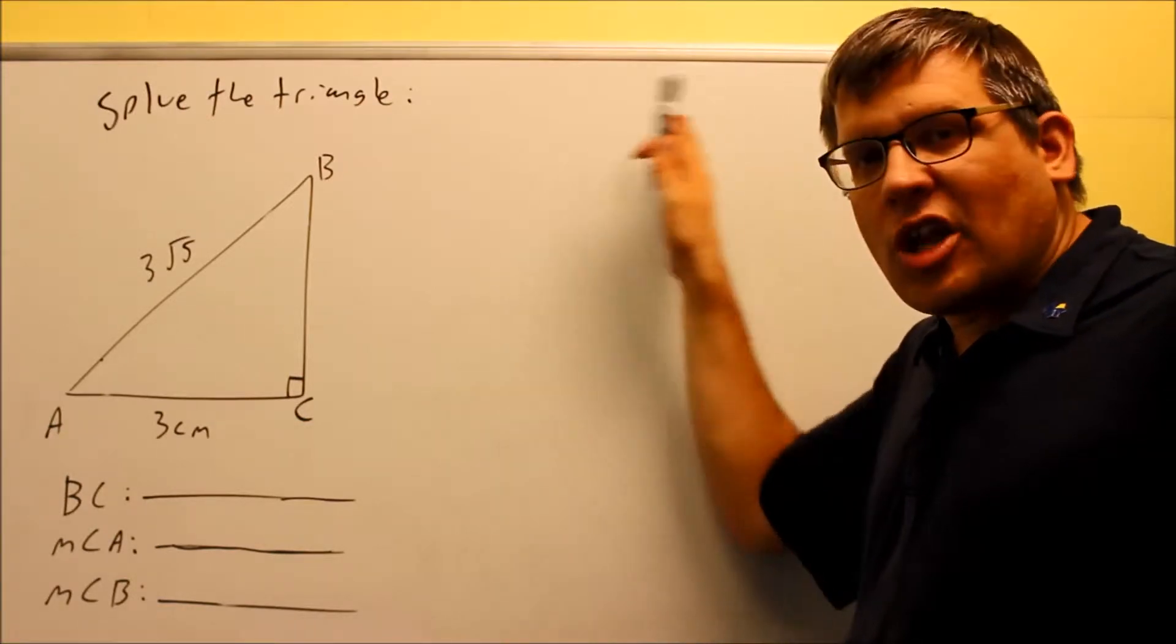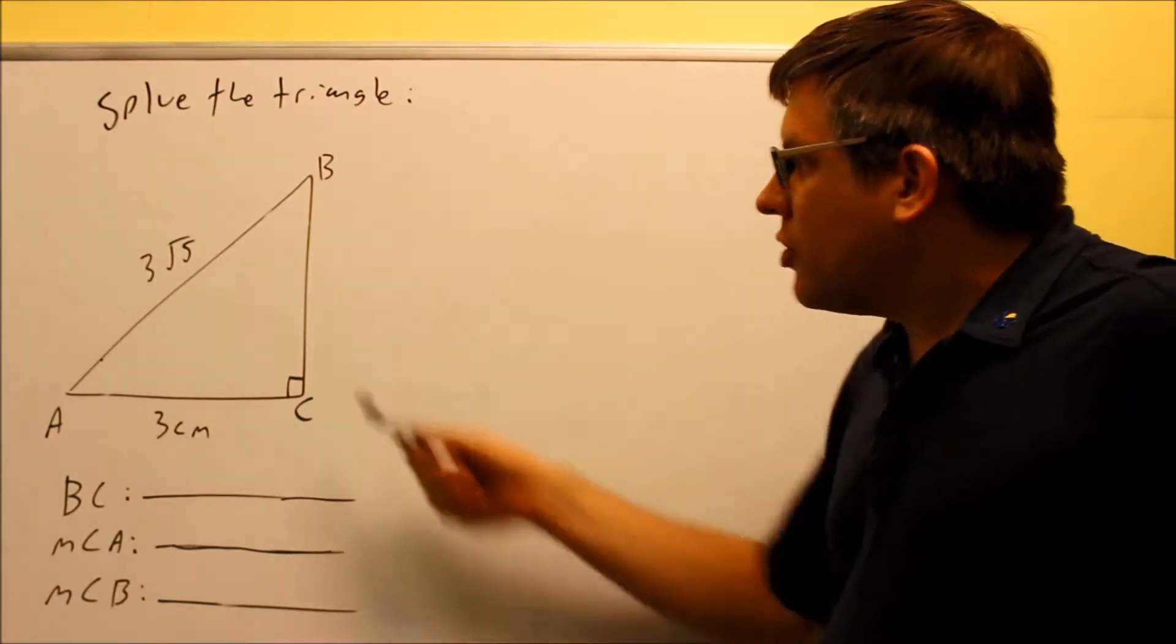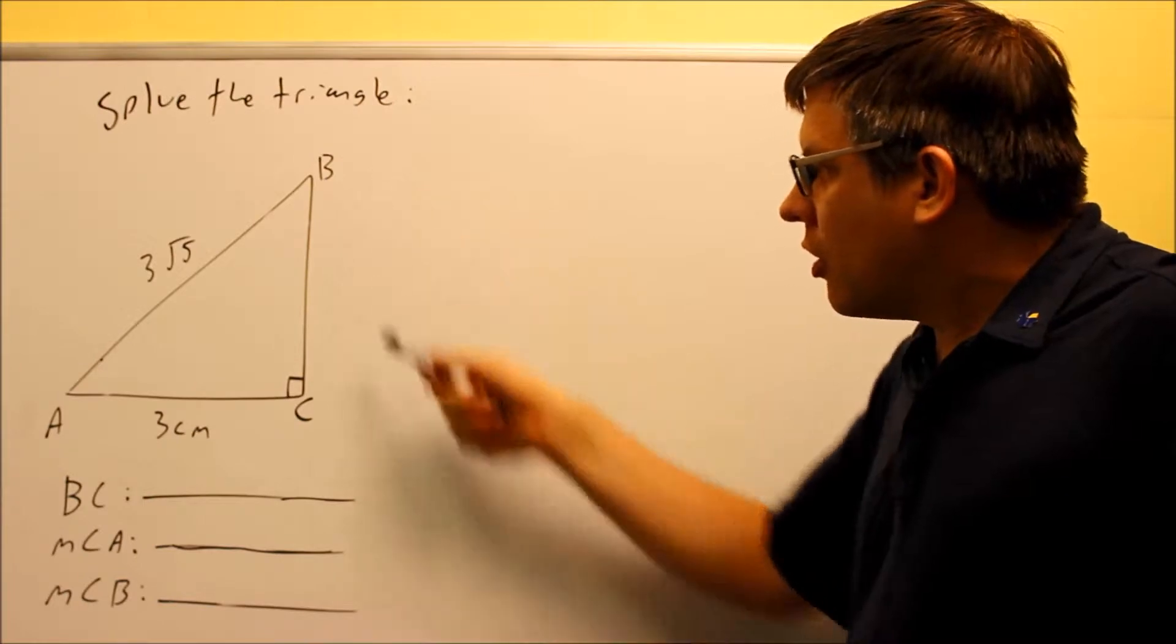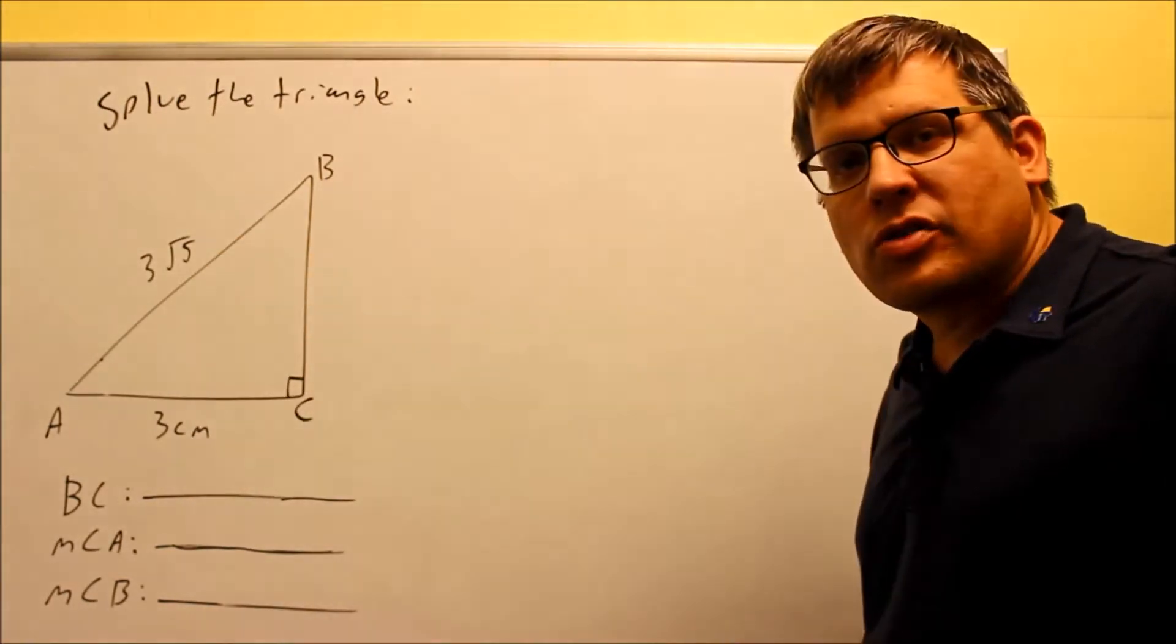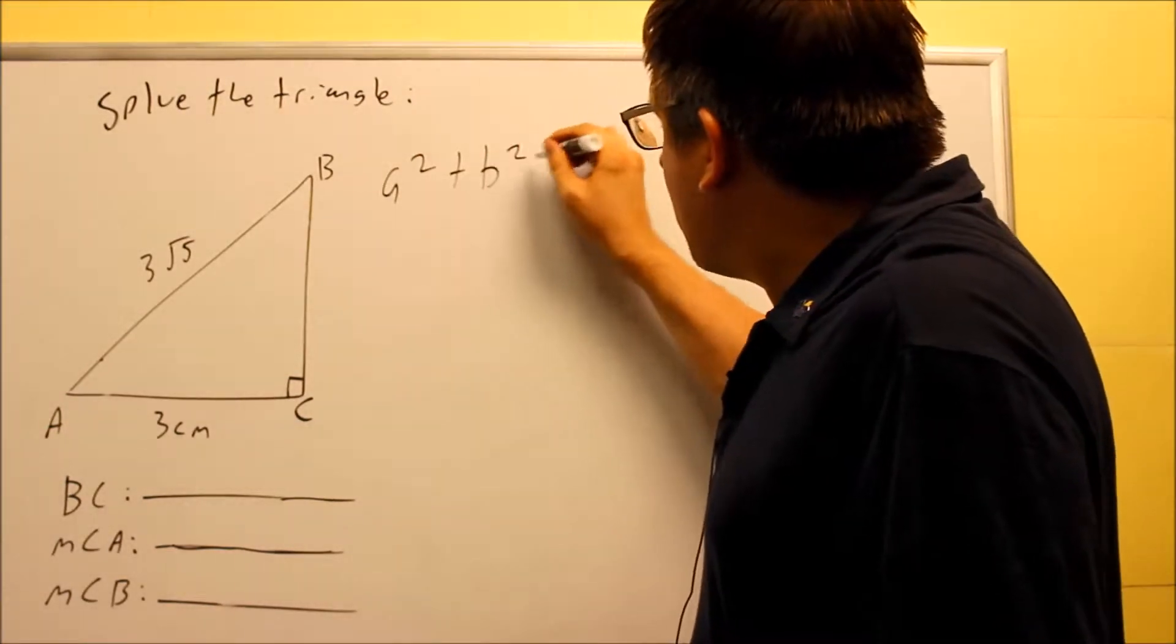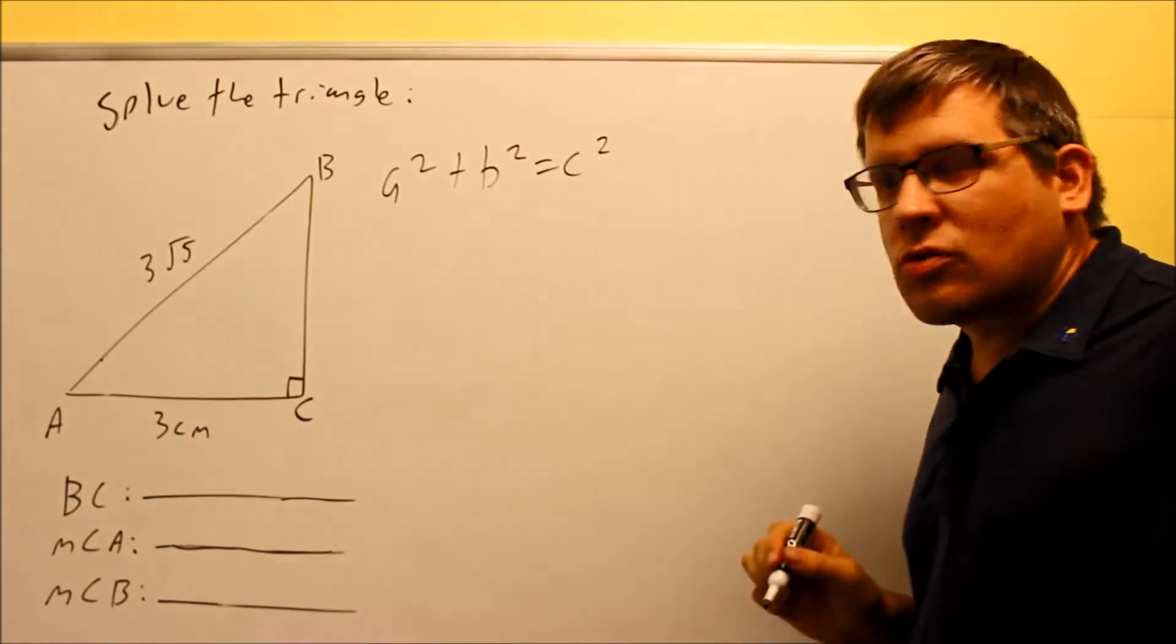So what we can do first of all, before we set up any of the inverse trig functions, we do have enough information to solve for side BC because it's a right triangle and we have two out of the three sides that are given. So the first thing you want to do is do A squared plus B squared equals C squared.